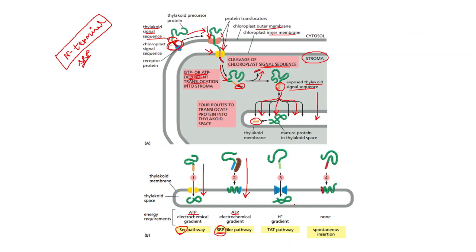The third pathway is the TAT pathway, or twin-arginine translocator pathway. Here there are two residues of arginine located within the thylakoid membrane that act as translocators — these two arginine residues are vital in translocating the protein from the stroma to the thylakoid. The fourth pathway is spontaneous insertion, where the protein gets translocated from the stroma into the thylakoid without the help of any protein, on its own.